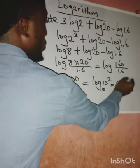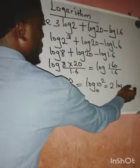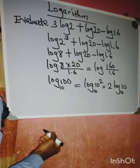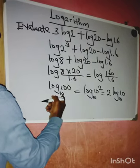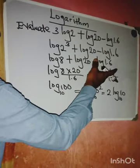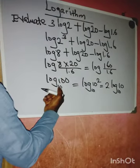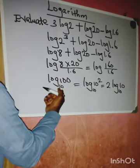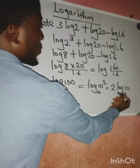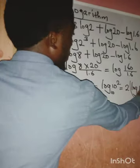The base is automatically 10 because there was no indication of the base. According to the law of logarithm, the whole of this one is equal to 1.